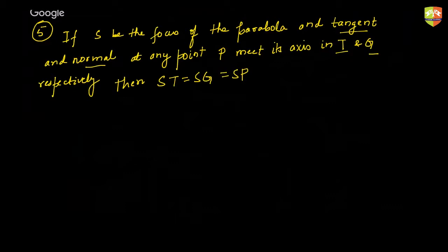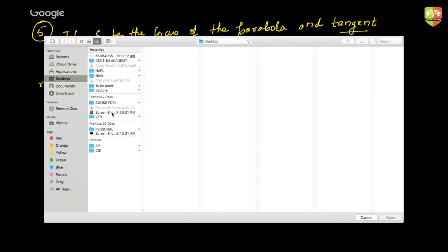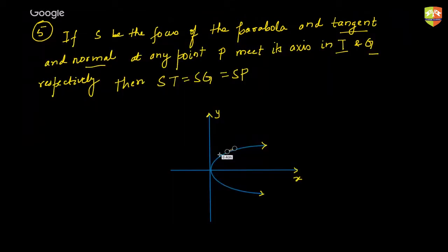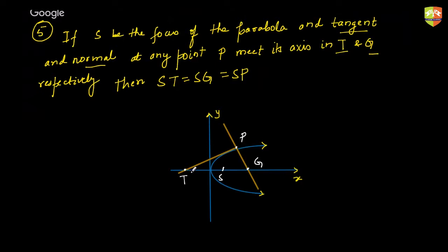Let's prove it. It's very simple — you just have to make a proper diagram and write the equation of tangent and normal and see where they meet the axis of the parabola. We have already seen ST is a plus at² and SP is also a plus at² — that's the focal distance.